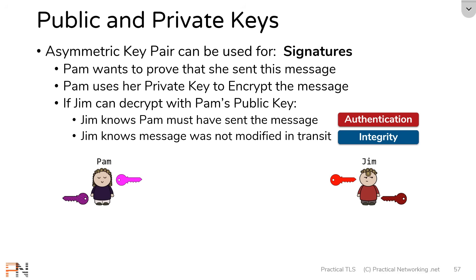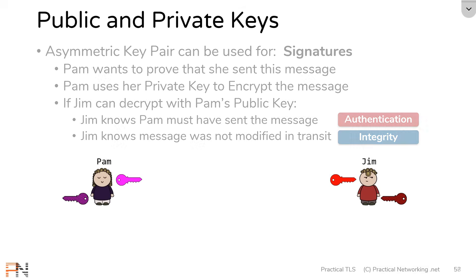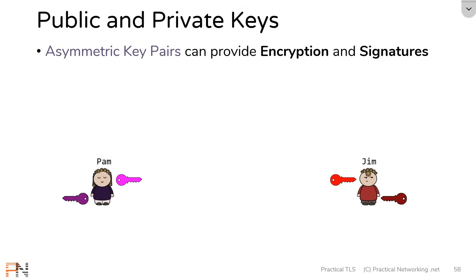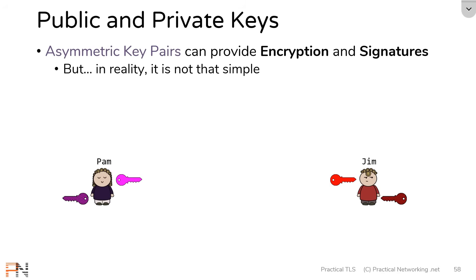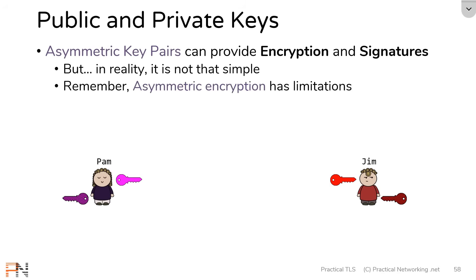This process is what's known as message signatures. You can use an asymmetric key pair to create a signature, which provides authentication and integrity for what was signed. So we've talked through how you can use an asymmetric key pair to provide both encryption for confidentiality and signatures for integrity and authentication. But in reality it's not quite that simple — asymmetric encryption has limitations, namely that it's inefficient for bulk data transfers because it's slower and more taxing on the CPU.